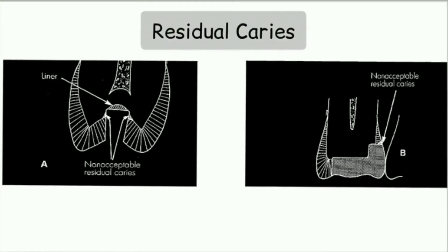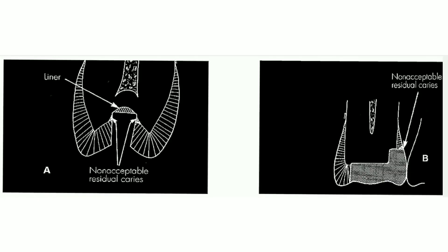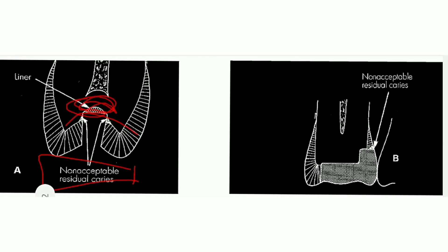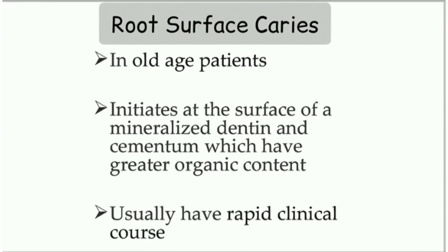You can see in this picture — we have prepared the cavity but have not removed this area, so this is our residual caries, which is non-acceptable. In this other case, this is our prepared wall and there is a small amount of caries residue over there, which is again not acceptable. Next, moving forward to root surface caries.